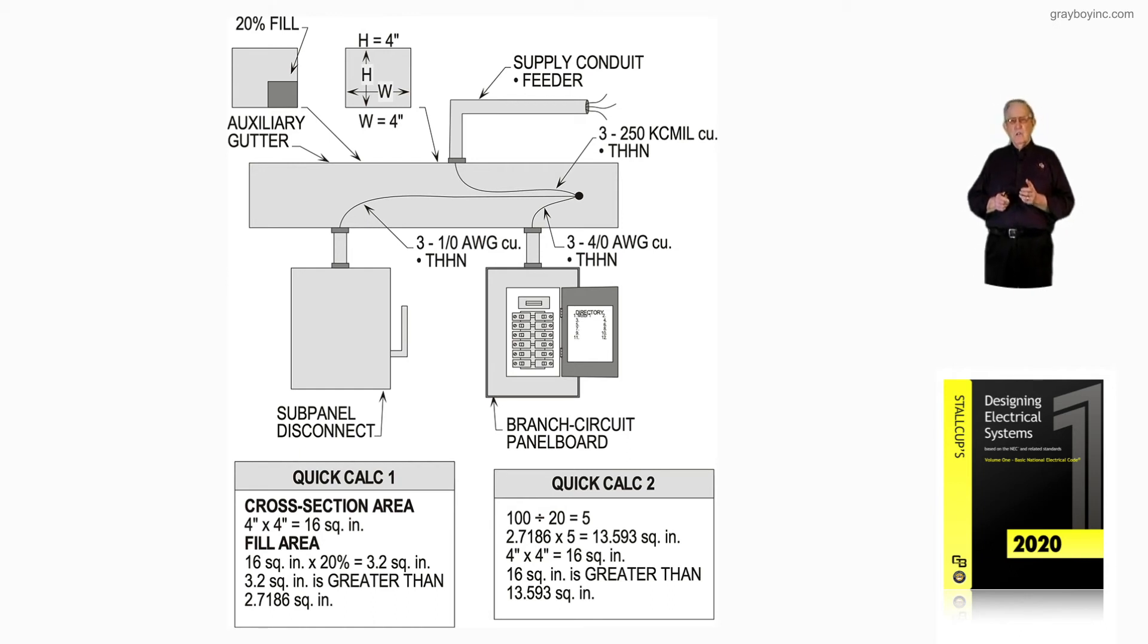Quick calc 2 says if you don't want to use the method of quick calc 1, then just take the 20% fill, divide it into 100, and get the reciprocal of 20, which would be 5. Then take the cross-sectional area of all your conductors coming into it, and that would be 5 times 2.7186, and that would give you a square inch area of 13.593. A 4x4 gutter at 16 square inches is greater than 13.593, so a 4x4 gutter could be used.